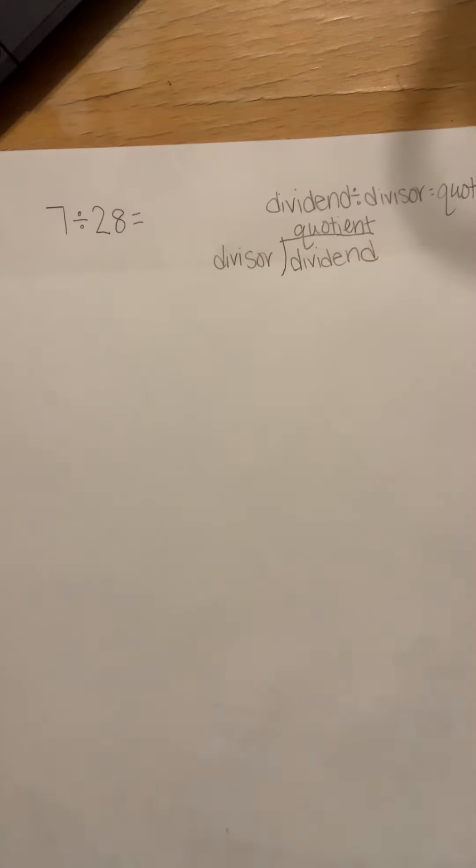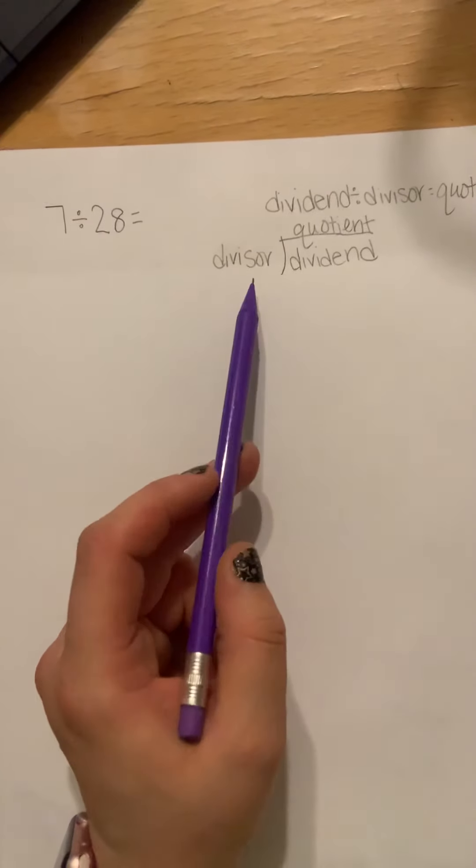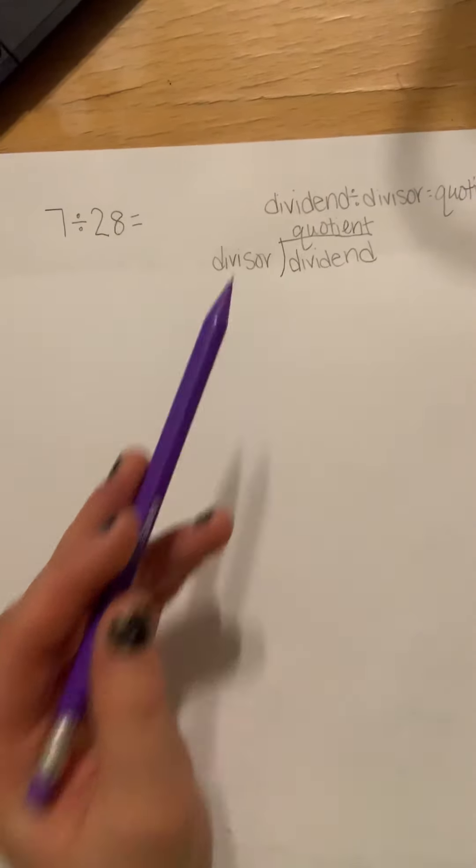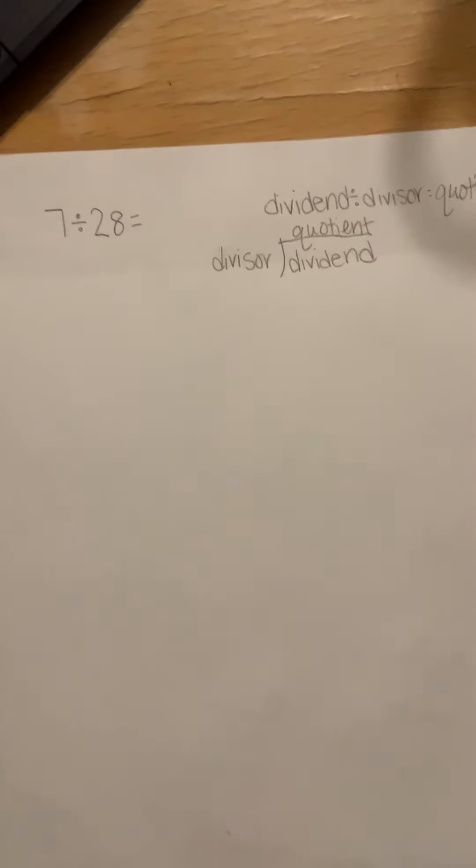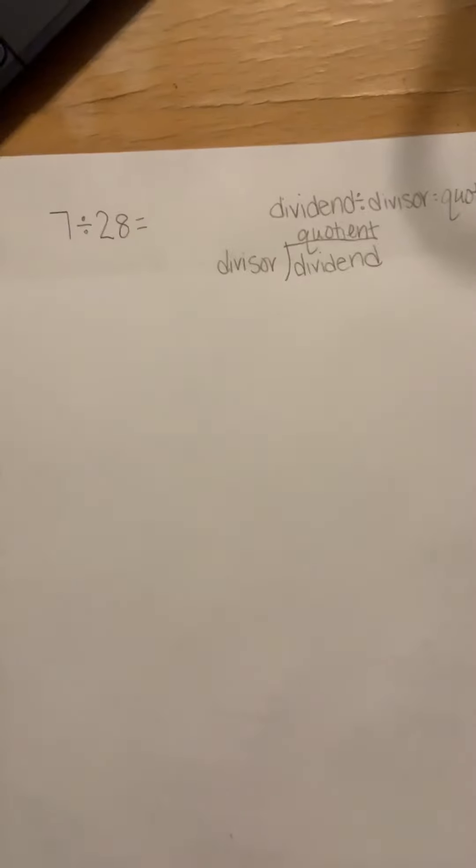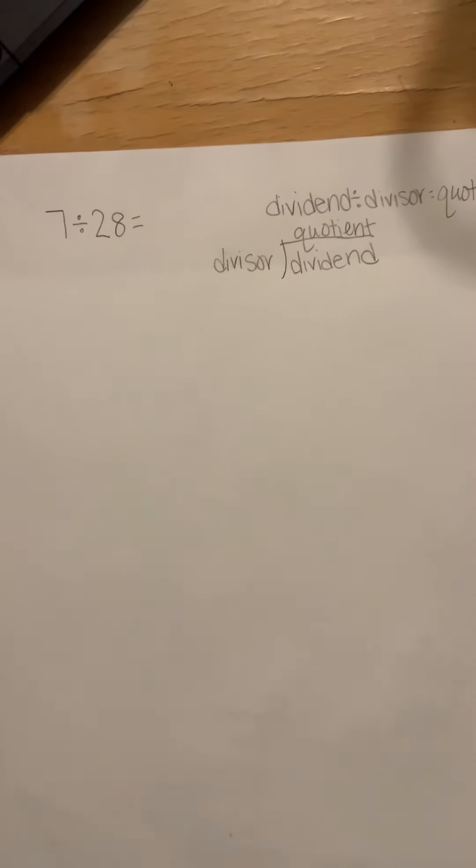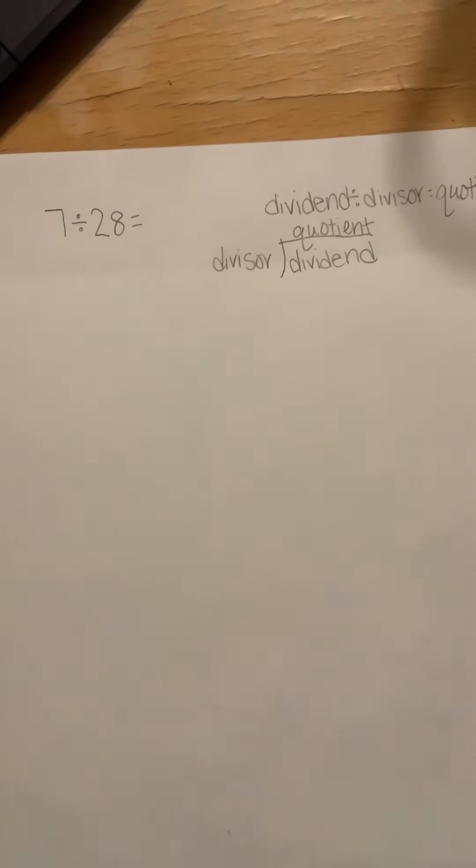Before we get started I want to remind you of how we set up division. When you're doing division you have a whole thing you're going to break apart whether it's pizza, marbles, money, whatever and that's going to be your dividend. You're going to divide it with the divisor and the divisor is how many groups you're dividing it into. The quotient is the answer you're going to get.